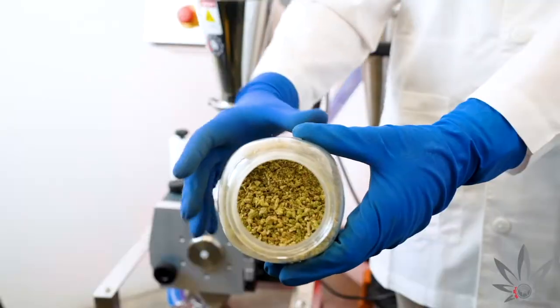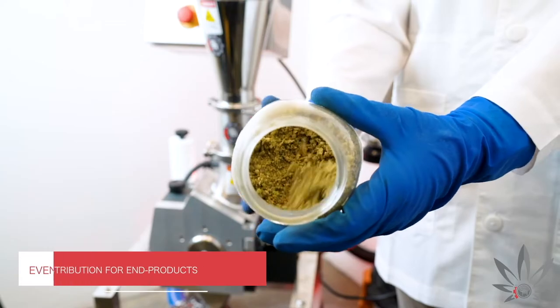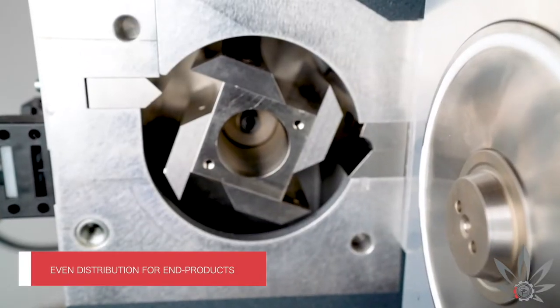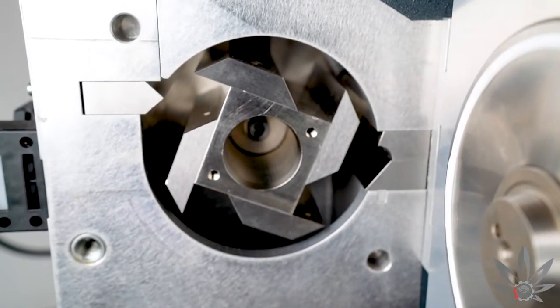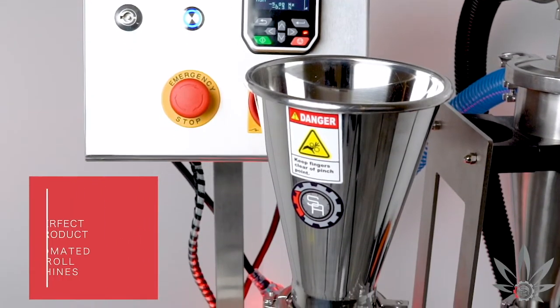This will also help produce an even more consistent particle size for an even distribution in products such as pre-rolls. Because of its precision milling capabilities and the PharmaGrade construction, this is the perfect product for companies using automated pre-roll machines.